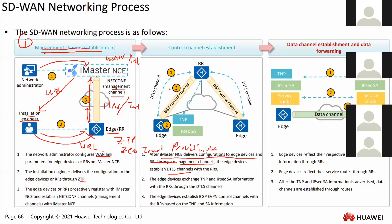After the management channel is established, iMasterNCE will deliver configuration to the edge devices and RR to establish the DTLS channel. Once the DTLS channel is established, devices will start to share TMP, BGP transport network port information, and IPSec SA information to the RR. Once the RR receives this information, it will start to form the BGP control channel.